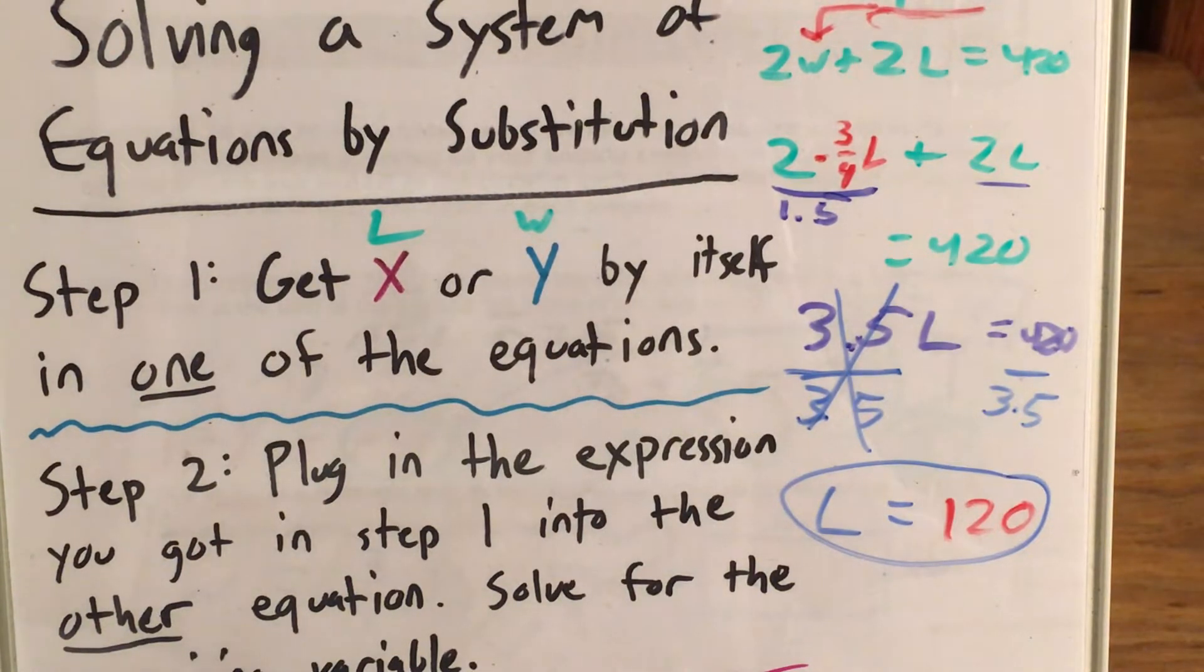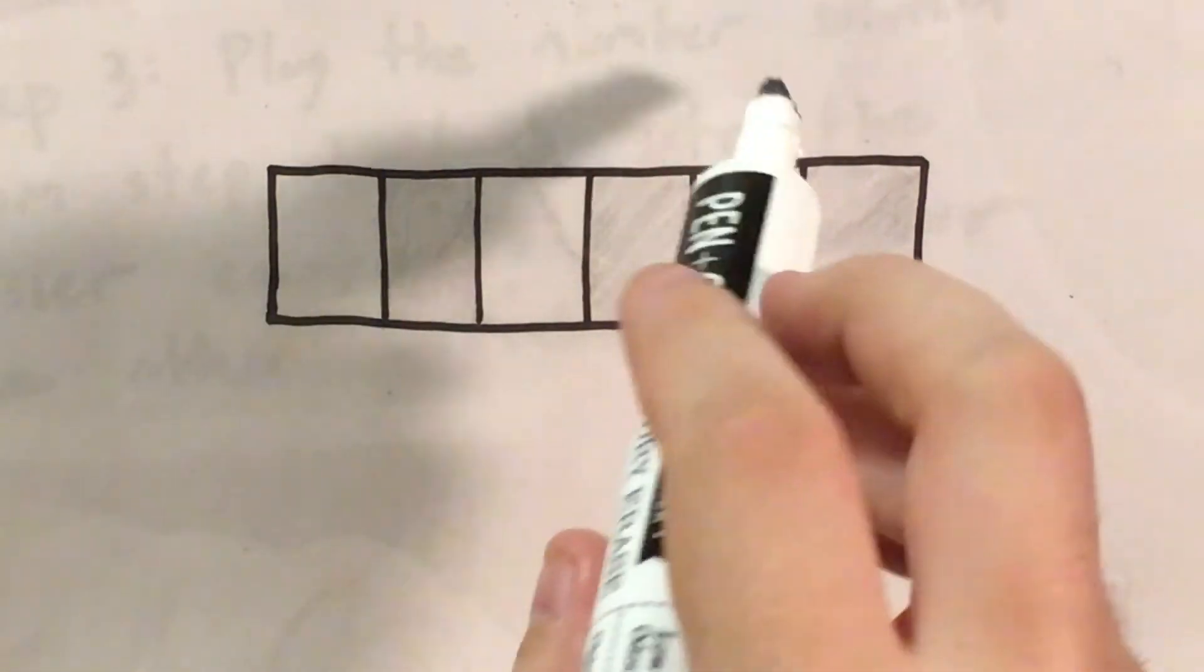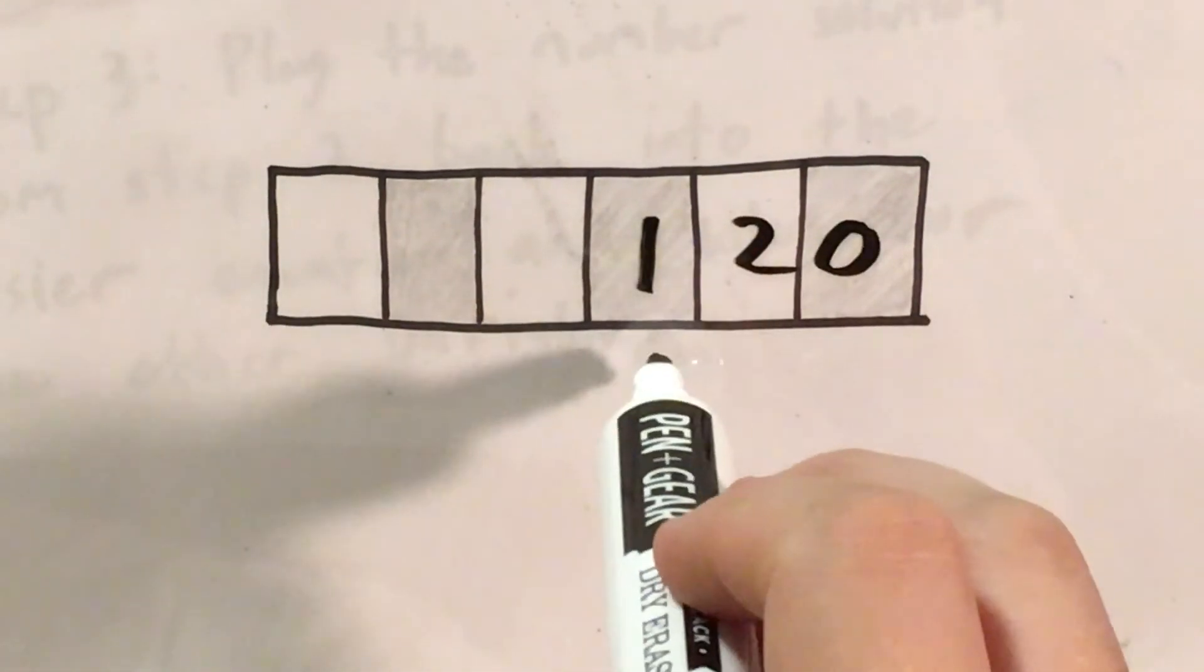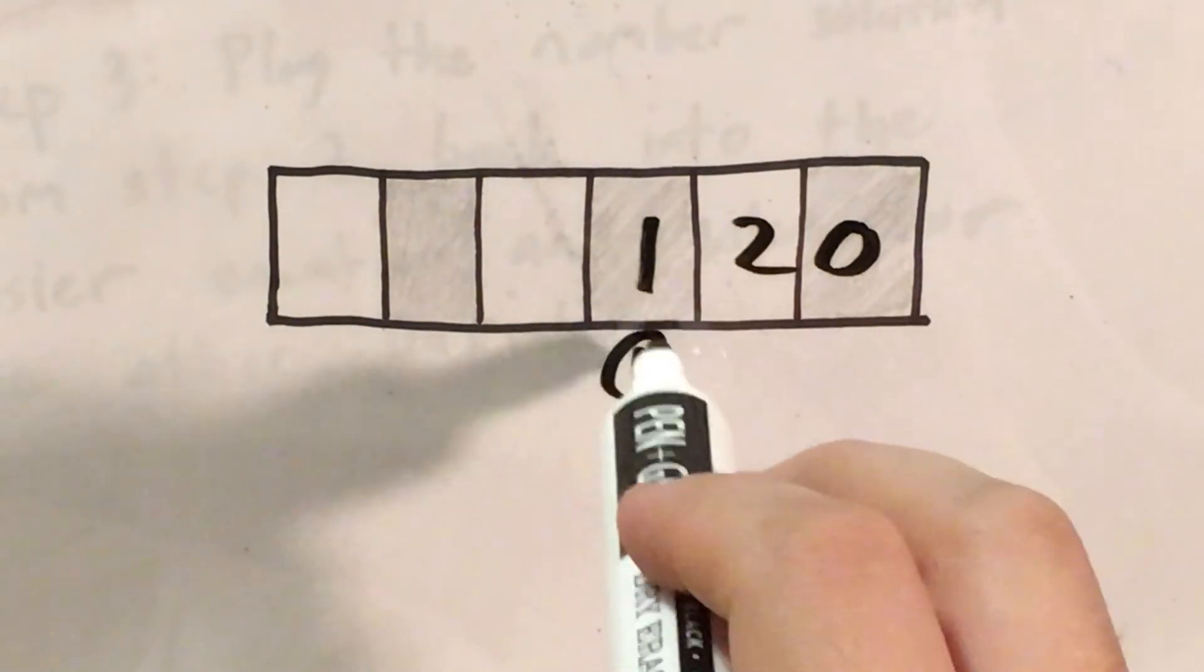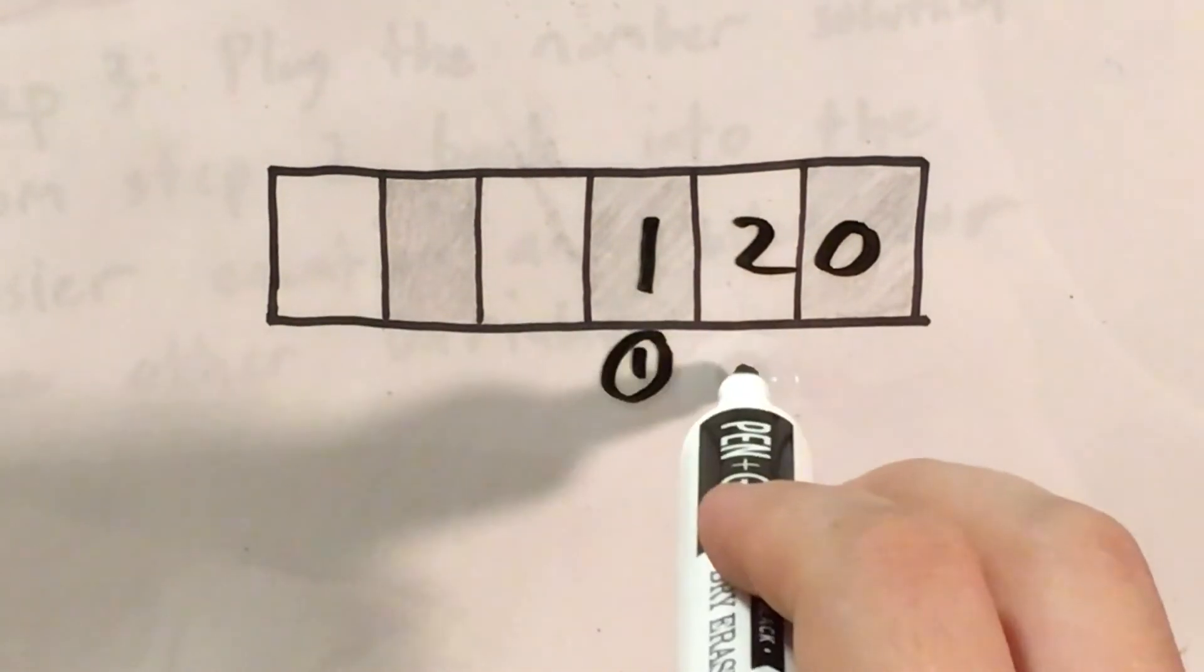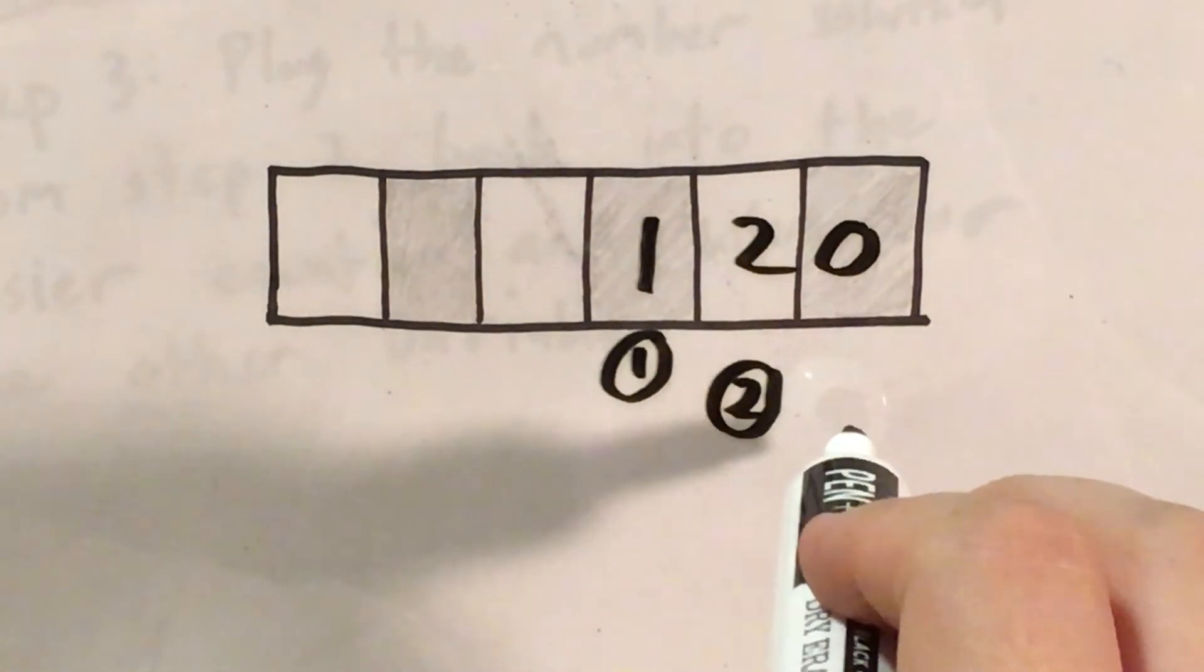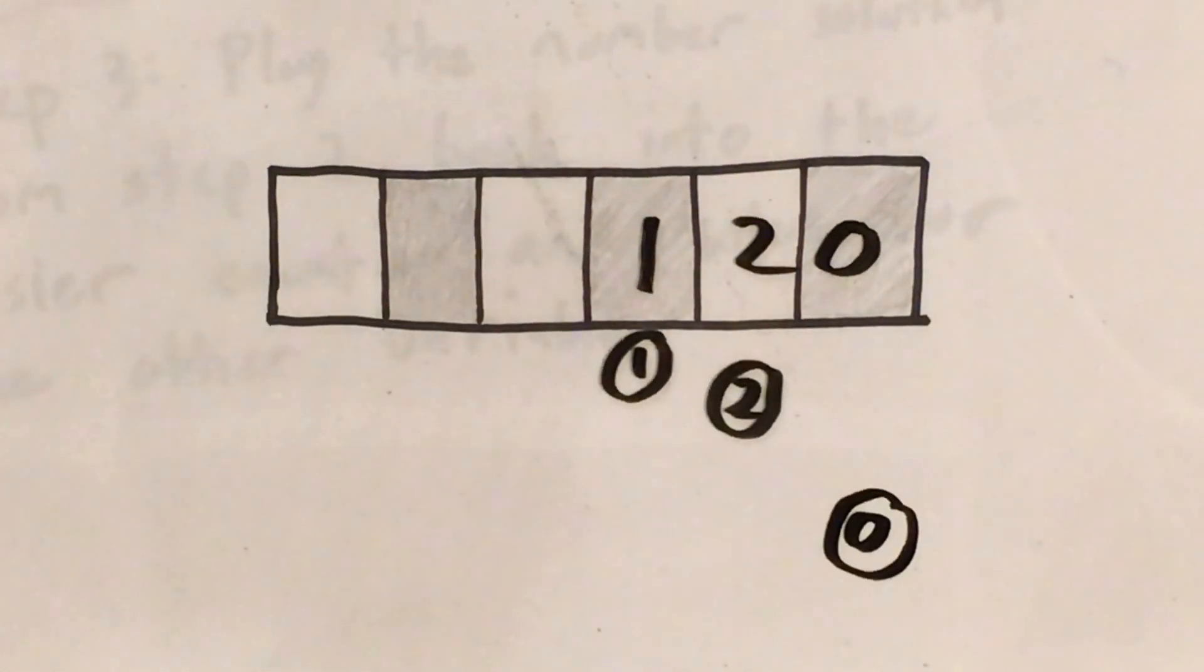I'm going to pull out my gridded response sheet so that I can actually fill in this answer in a way that the computer that grades my test will understand. So my answer was 120. I will give each digit of this number its own box. I find my one bubble under my one and bubble that in, my two bubble under my two, and my zero bubble under my zero. And that's it.